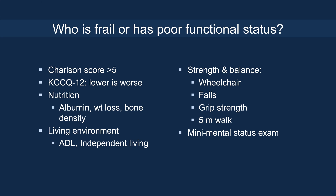Who is frail or has poor functional status? That's still an important question the heart team must face. A number of objective criteria have been proposed, such as Charlson score, lower KCCQ-12 score, low albumin level, bone density or weight loss, ADLs and IADLs in terms of independent living, strength and balance — such as whether they are wheelchair-dependent or use an aid to ambulate — grip strength, 5-meter walk test, and mini mental status exam.